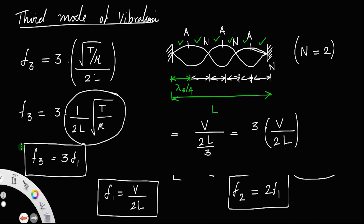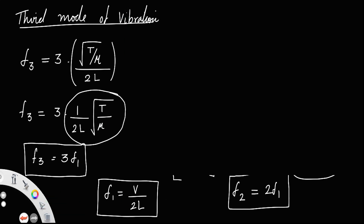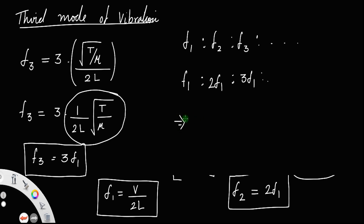What we get from this is that all modes of vibration are whole number multiples of the fundamental frequency. Taking the ratio F1 to F2 to F3 and so on: since F2 equals 2F1 and F3 equals 3F1, the ratio is 1 to 2 to 3 and so on — that is, the ratio of the harmonic frequencies corresponds to the natural numbers.